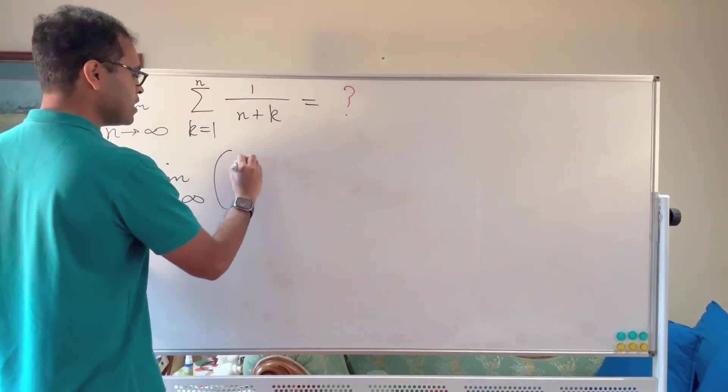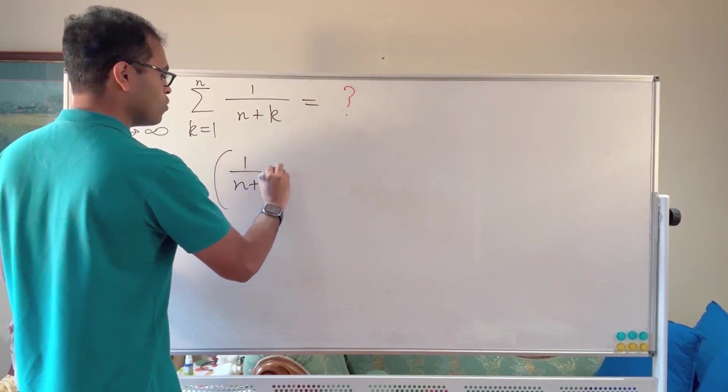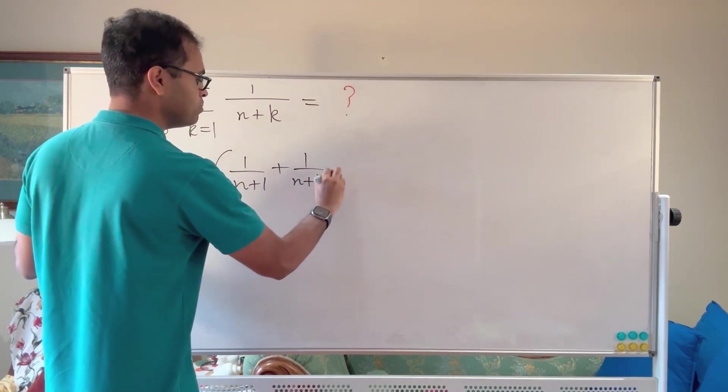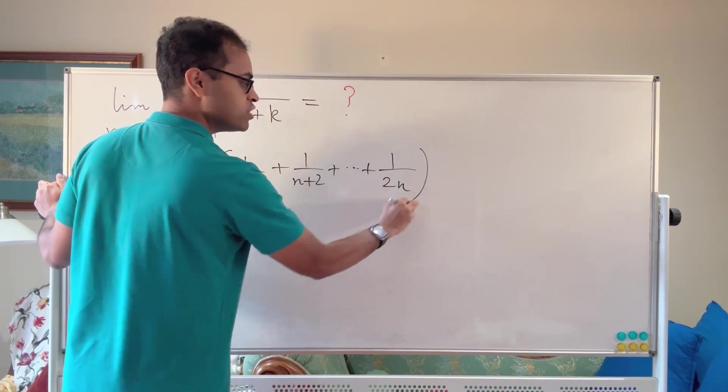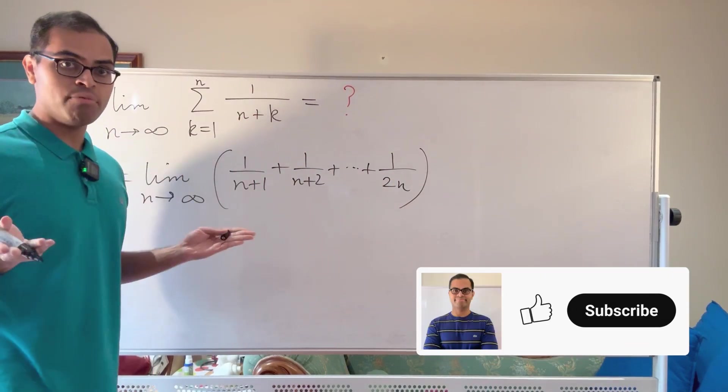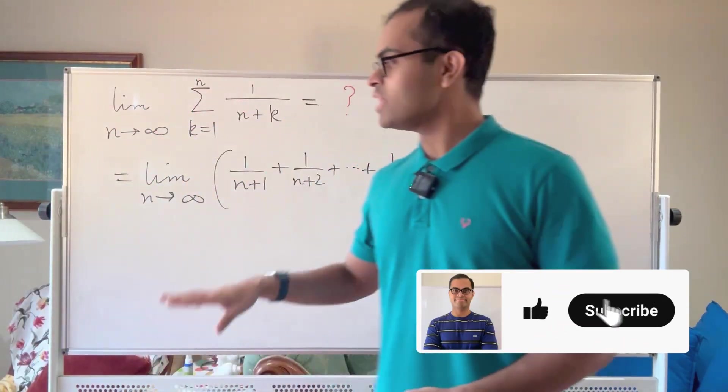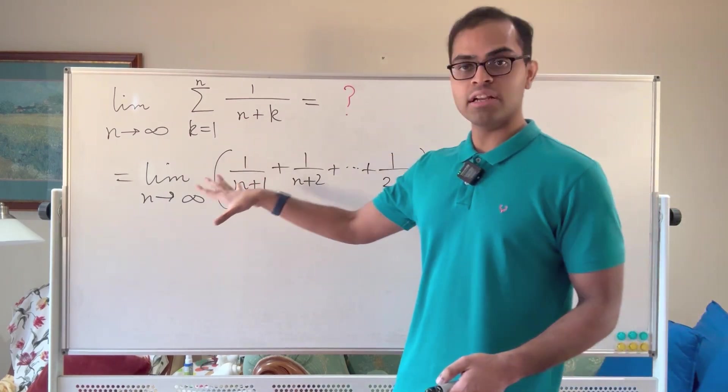So if you actually expand up the sum just to be really clear, you get 1 over n plus 1, plus 1 over n plus 2, all the way up to 1 over n plus n, which is just 1 over 2n. And that's going to be the sum we're looking at for each n, and then we want to evaluate it and take n goes to infinity.